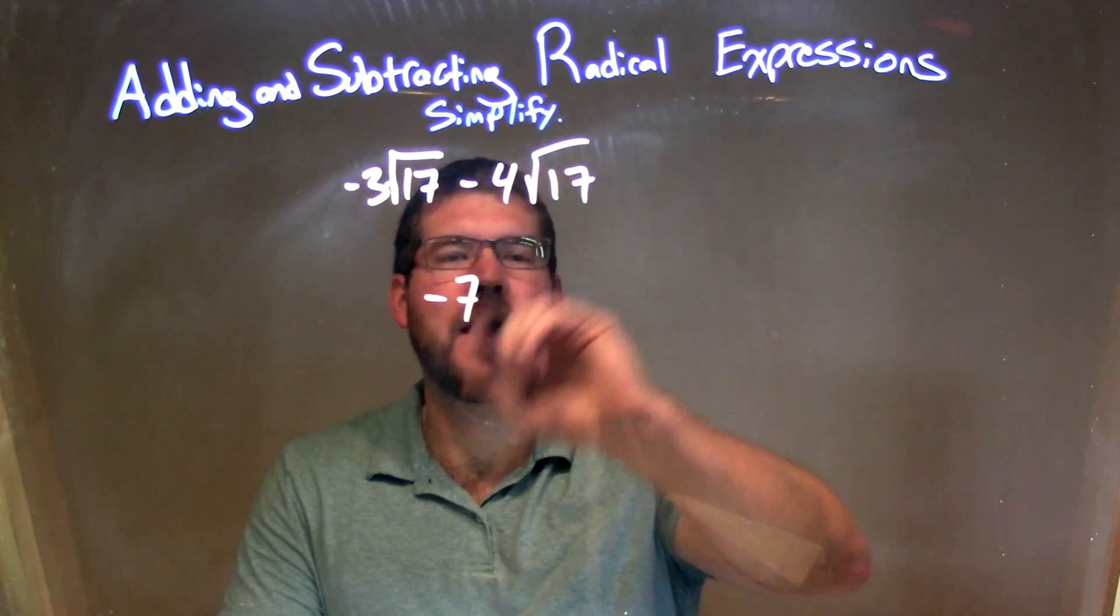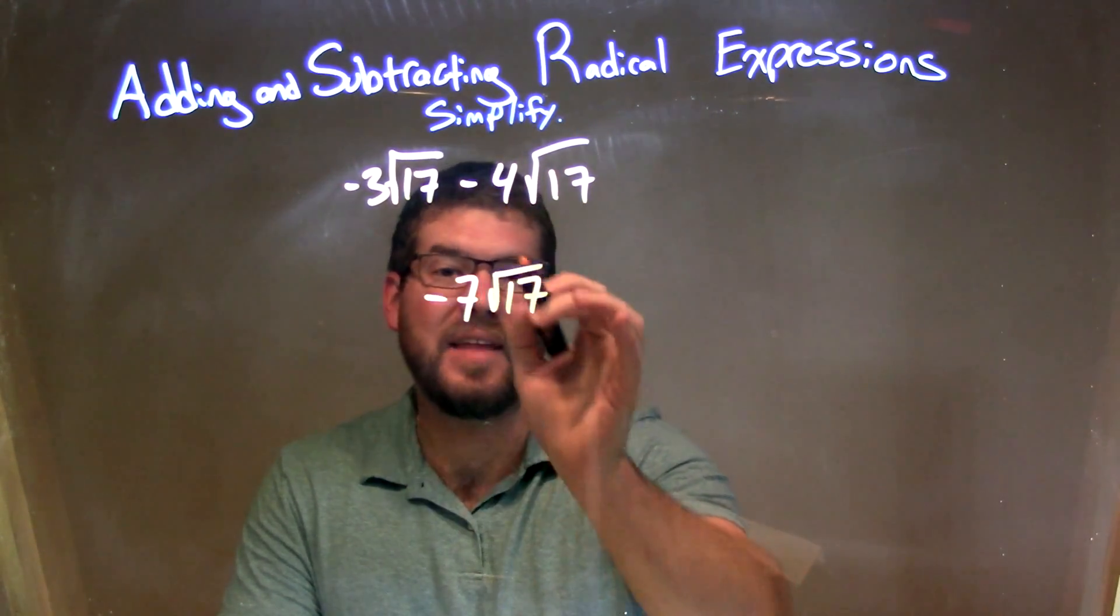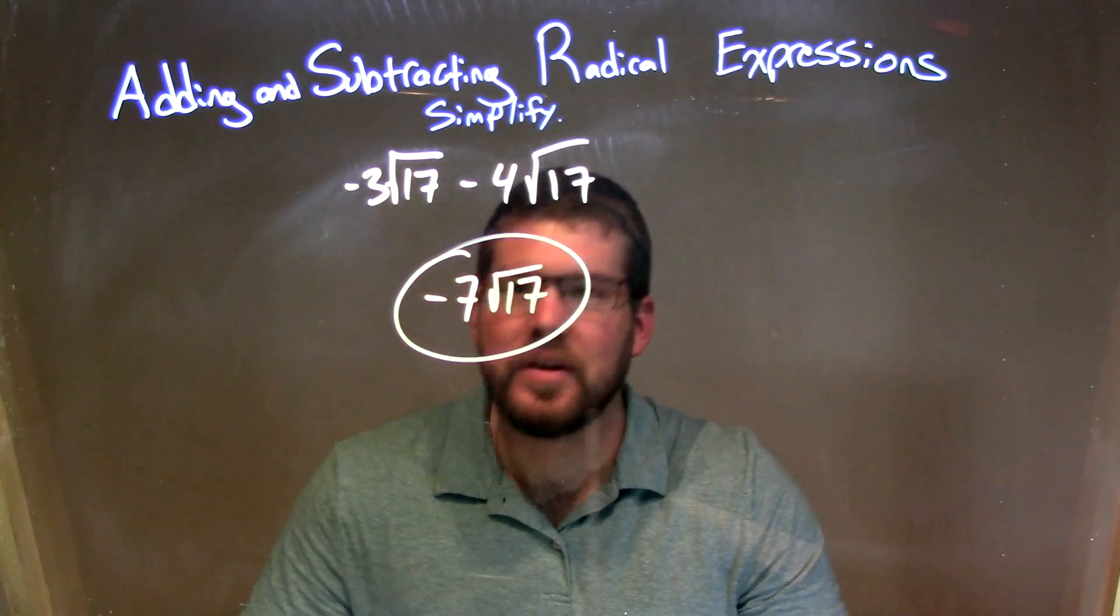And then we just multiply that by the same square root, the square root of 17. And that's it. Pretty quick, pretty easy, and that's our final answer.